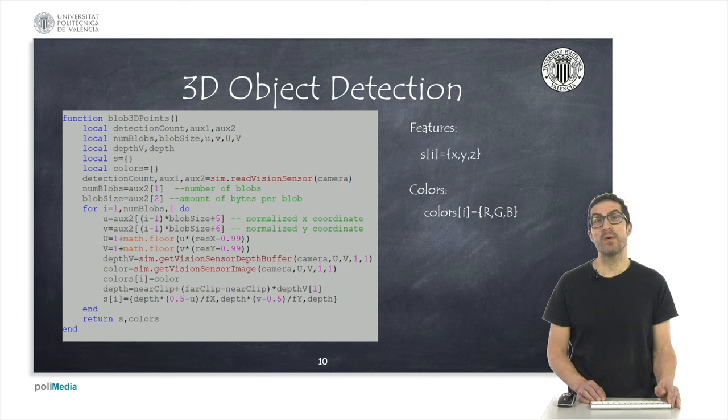Also, inside the for loop, I get the color of the object, the RGB color, particularly the pixel in which we have the x and y coordinate, and we store this in the colors variable. In summary, the Blobs3DPoints function returns a list of coordinates with each of the features, and it has also a list with all the colors.